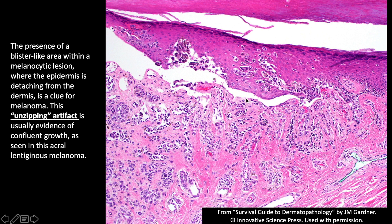Sometimes confluence causes an artifactual separation of the epidermis and dermis — the so-called unzipping artifact, or melanocytic blister. This is not a real blister in vivo; it's an in vitro artifact where there are so many melanocytes that the epidermis gets pulled apart from the dermis during tissue processing. There are just not enough basal keratinocytes with hemidesmosomes to hold it down. If I see that, it's a good clue for confluent growth.